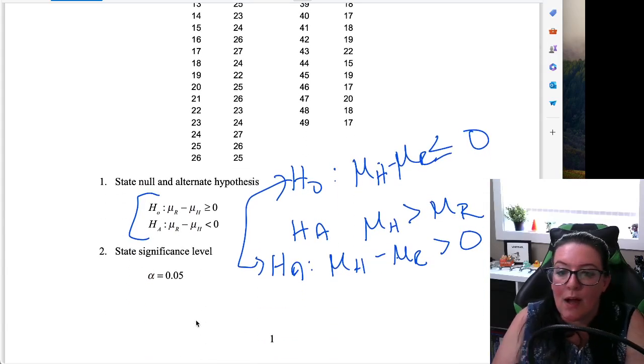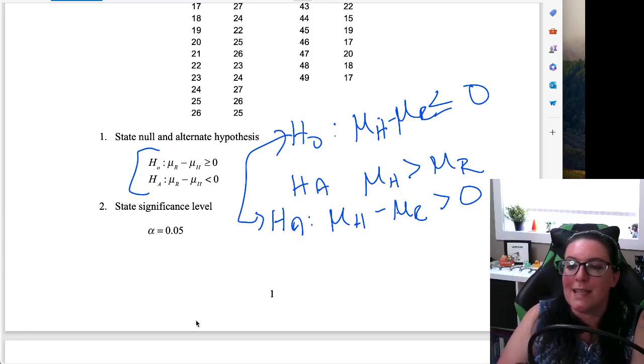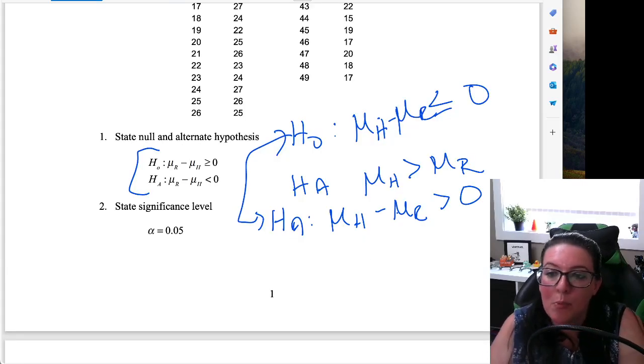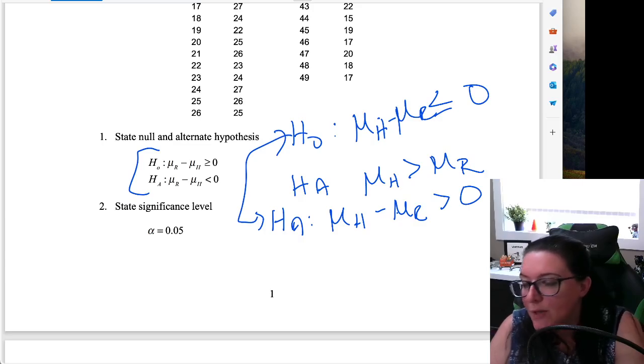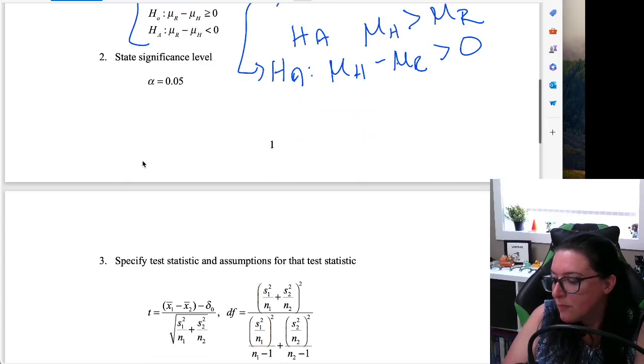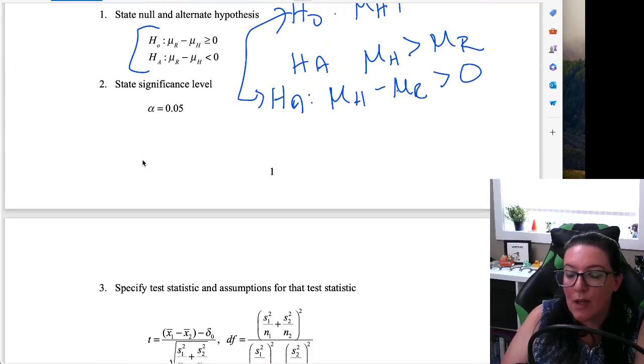Then we need to state the level of significance. As we talked about in our previous video, what is the type 1 error? And just to recap quick, our type 1 error is the probability that we reject the null hypothesis when we should not have. So we specify the level of significance.